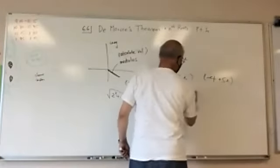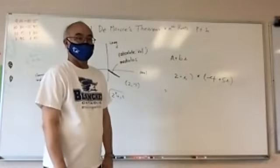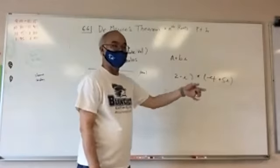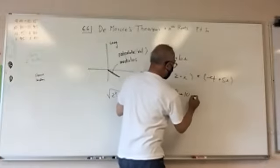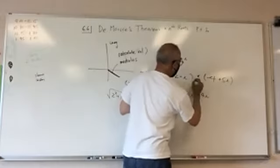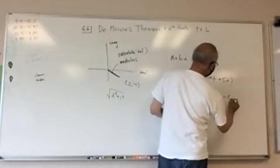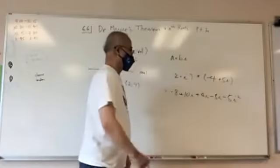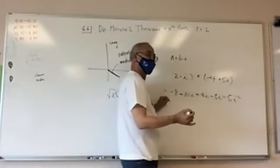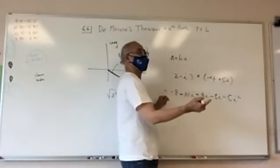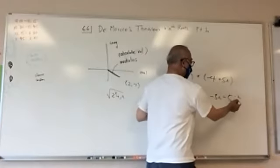How would I multiply? You just distribute it out. So two times that, two times that, this times that, this times that — you'd get negative five i squared. What is negative i squared? i squared is negative one, so negative i squared would be five. Negative five times negative one gives you five.